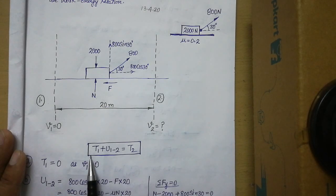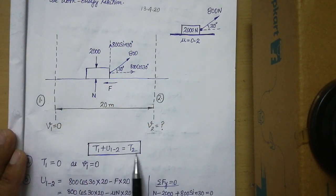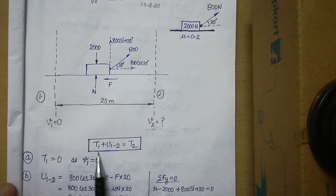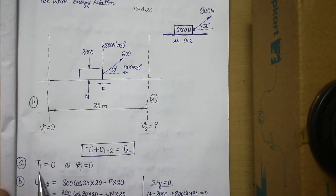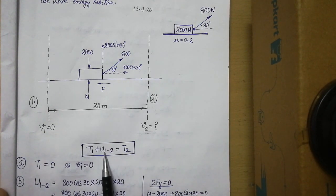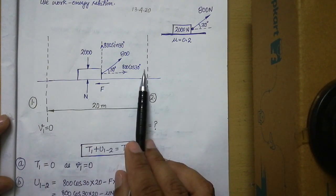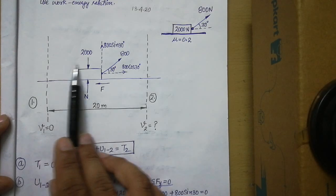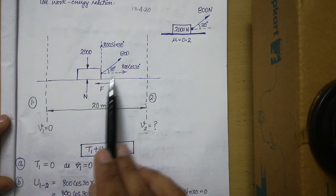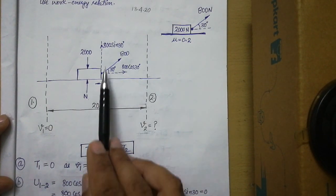We are dealing with the work-energy principle: initial kinetic energy plus work done on the object from Stage 1 to Stage 2 equals the final kinetic energy. The initial kinetic energy is zero because the block starts from rest, so initial velocity is zero. Since the block moves along the horizontal direction, only those forces acting along the horizontal are responsible for work done — specifically 800 cos 30 and the frictional force.